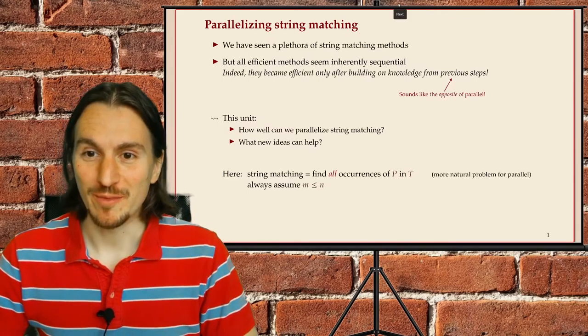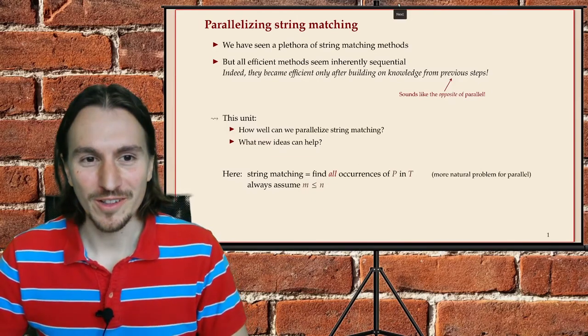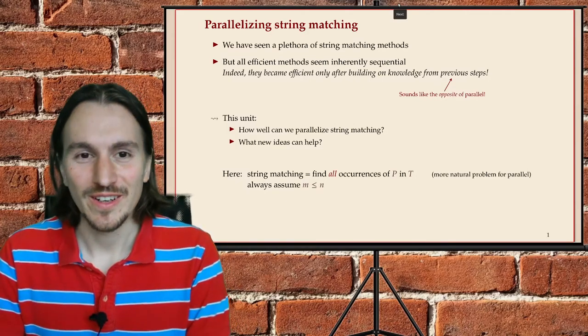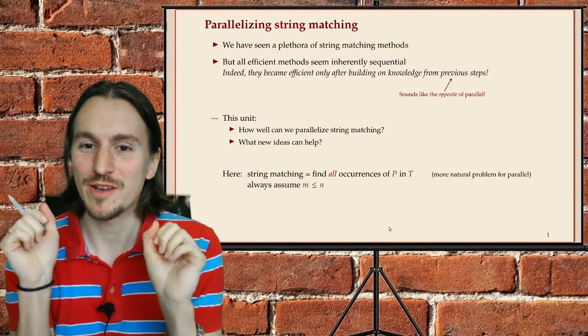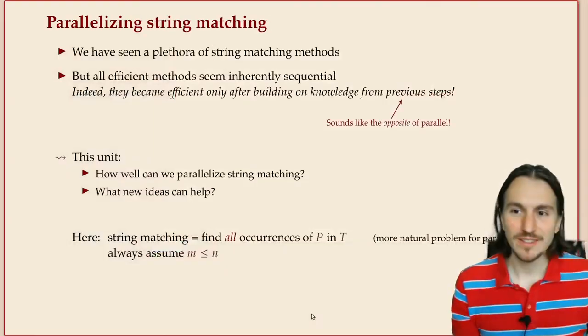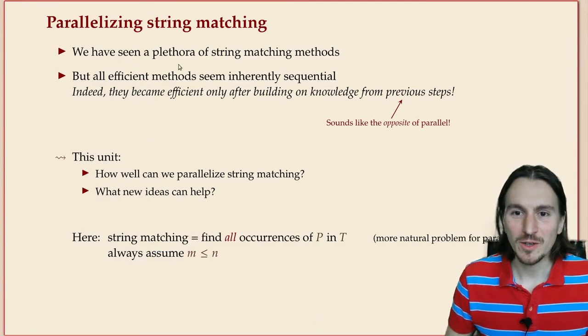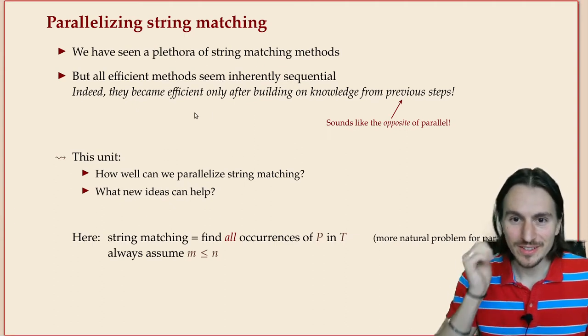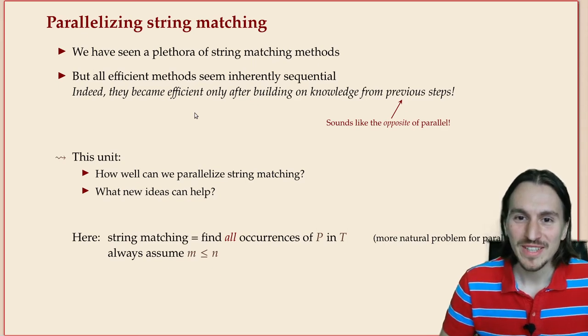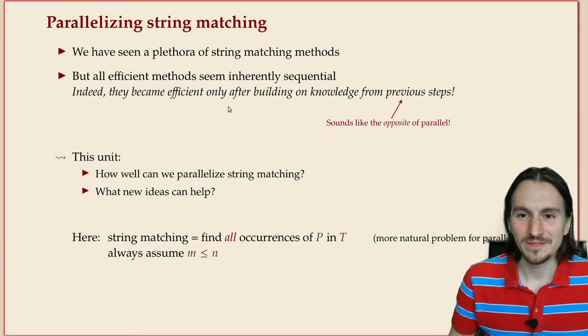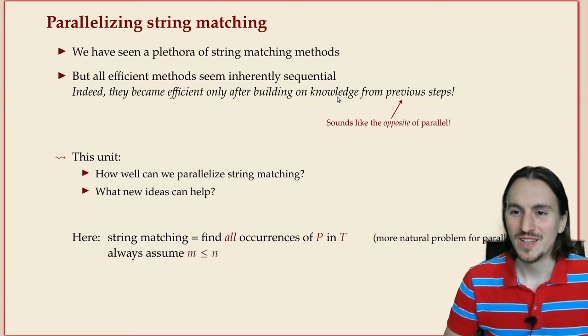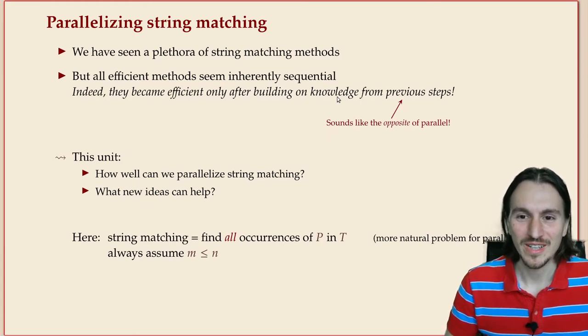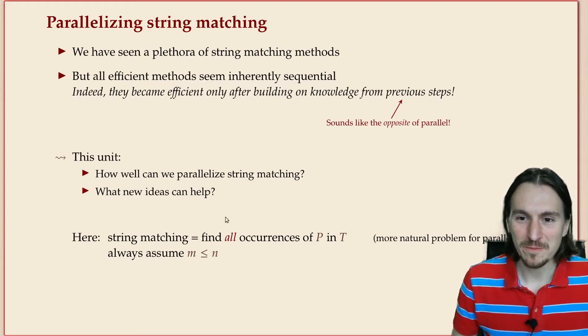Let's try to parallelize string matching. Remember, in parallelization on the PRAM model, we have parallel processing elements and we need something where there's no data dependencies between steps. We've seen quite a few different methods, but if you look at them all, they seem inherently sequential. Effectively, maybe except the brute force method, they all became efficient by using knowledge from the step just before, and that's a game stopper for parallelism.